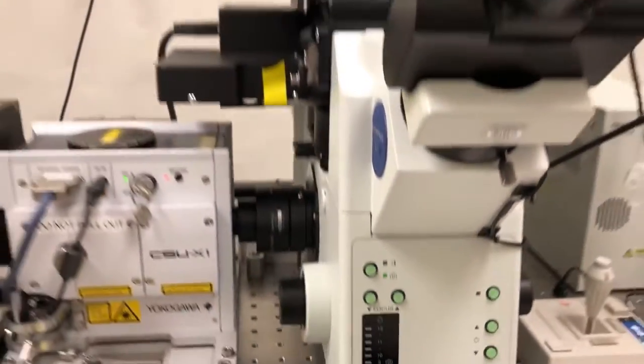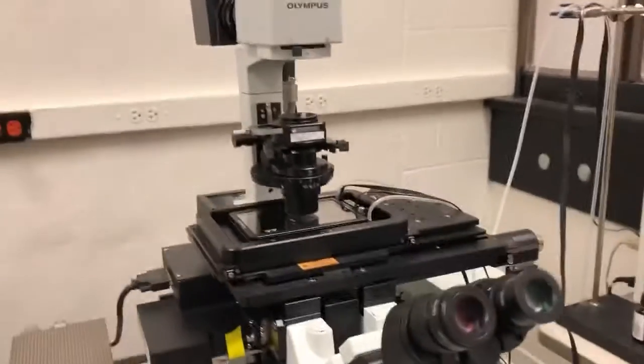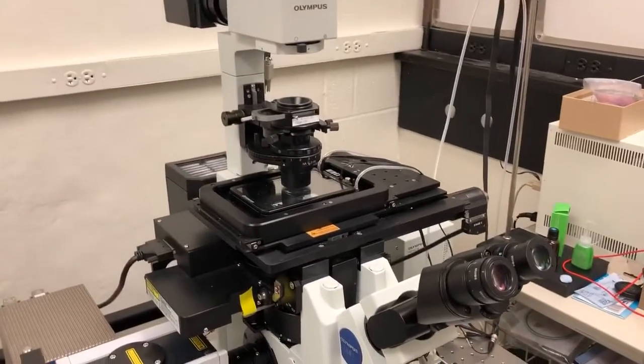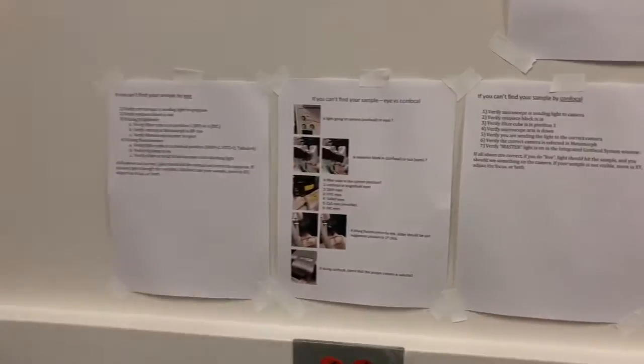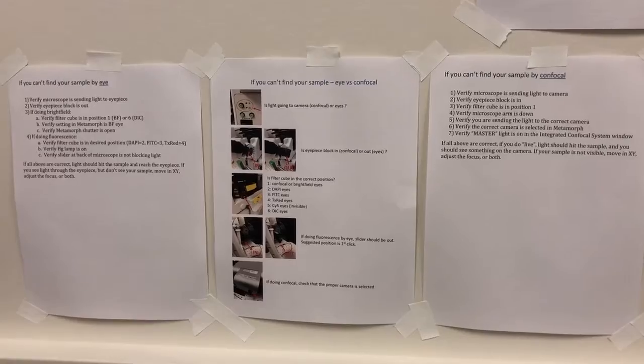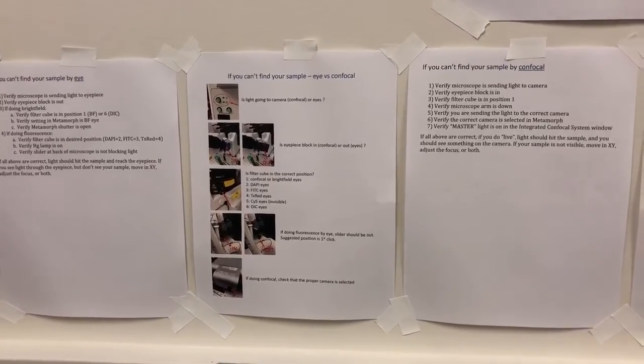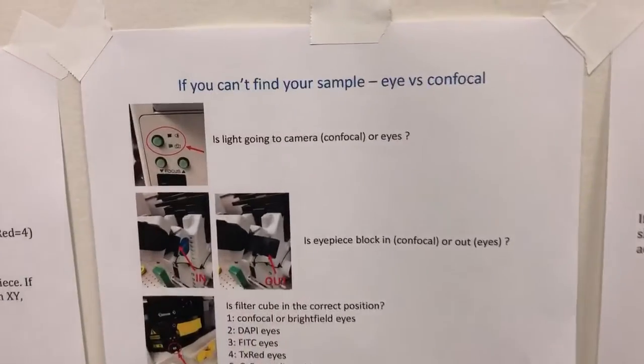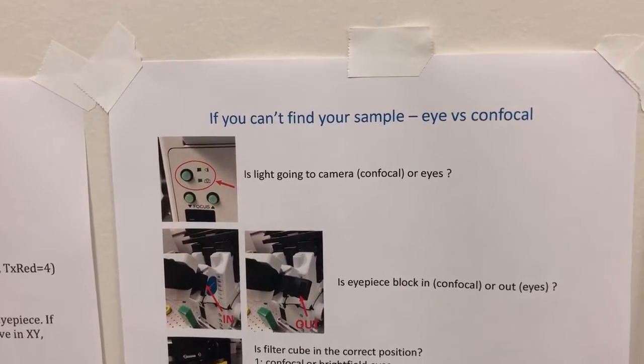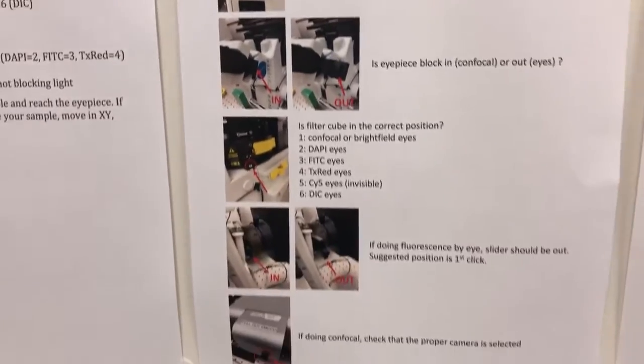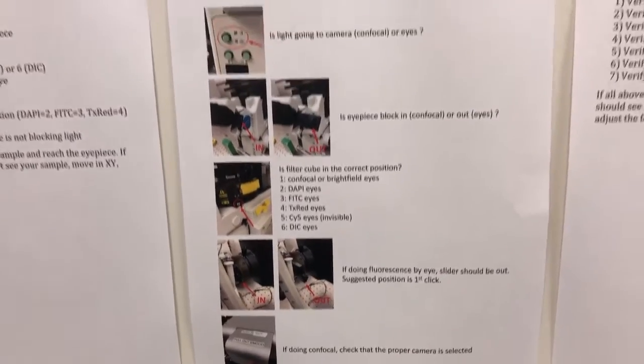Now, if you are trying to look at things by eye, or you are trying to look at things with the confocal and you can't see anything, we have a number of instructions here on the wall that will help you troubleshoot this. If you can't find your sample, here are some things that should be different between the eye and the confocal. You can read those there if you're ever in that situation.